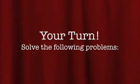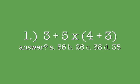First, let's do 3 plus 5 times the parentheses 4 plus 3. Pause now to work it out. Your answer should be 38. 4 plus 3 equals 7 times 5 equals 35 plus that 3 equals 38.